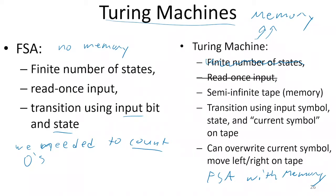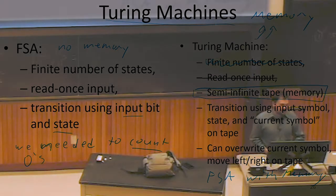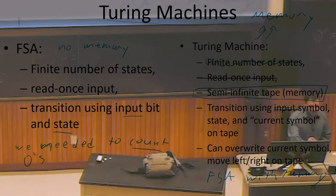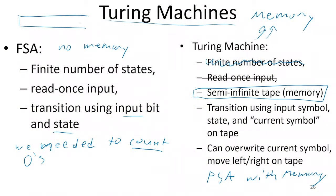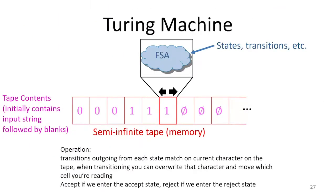We're going to have this extra thing available to us, which we call a semi-infinite tape. We call it semi-infinite because it's infinite in one direction — it has a beginning but no end. The tape has a bunch of different positions where we can store a bit. We have a first bit, but we have no last bit and no last position on this memory.